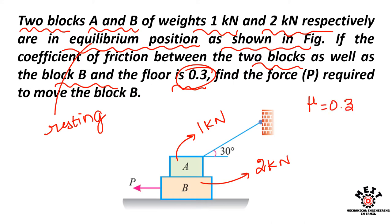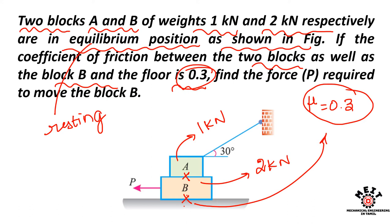We have two blocks in contact. Between block B and the floor, the coefficient of friction value is 0.3. What we need to find is the force P required to move block B.